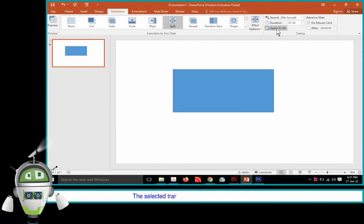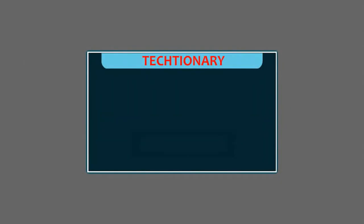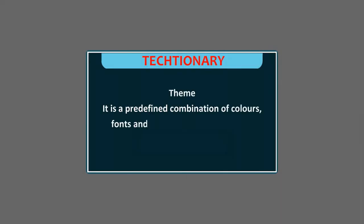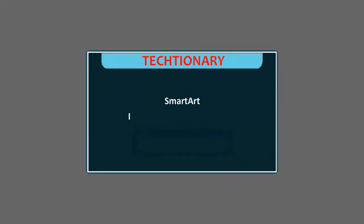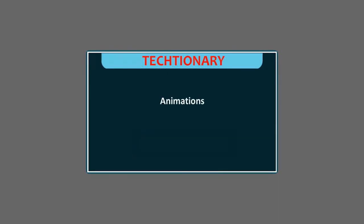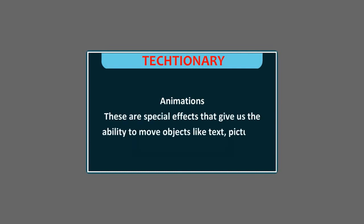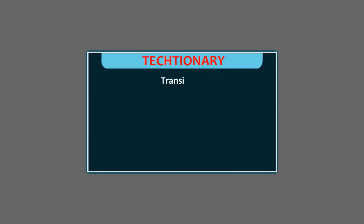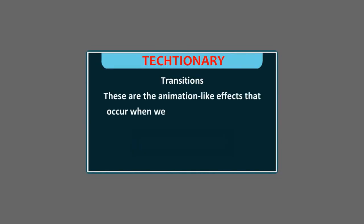Glossary. Theme: A predefined combination of colors, fonts, and effects that can be applied to our presentation. Smart Art: A predefined art design. Animations: Special effects that give us the ability to move objects like text, pictures, charts, etc. in any direction in a slideshow. Transitions: Animation-like effects that occur when we move from one slide to the next during a presentation.